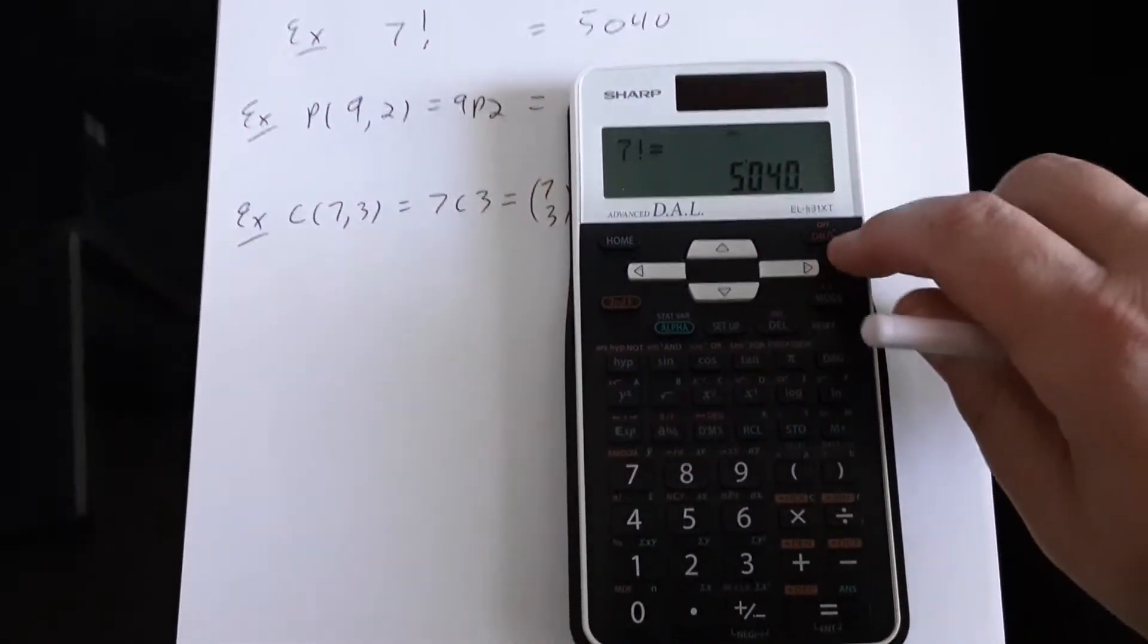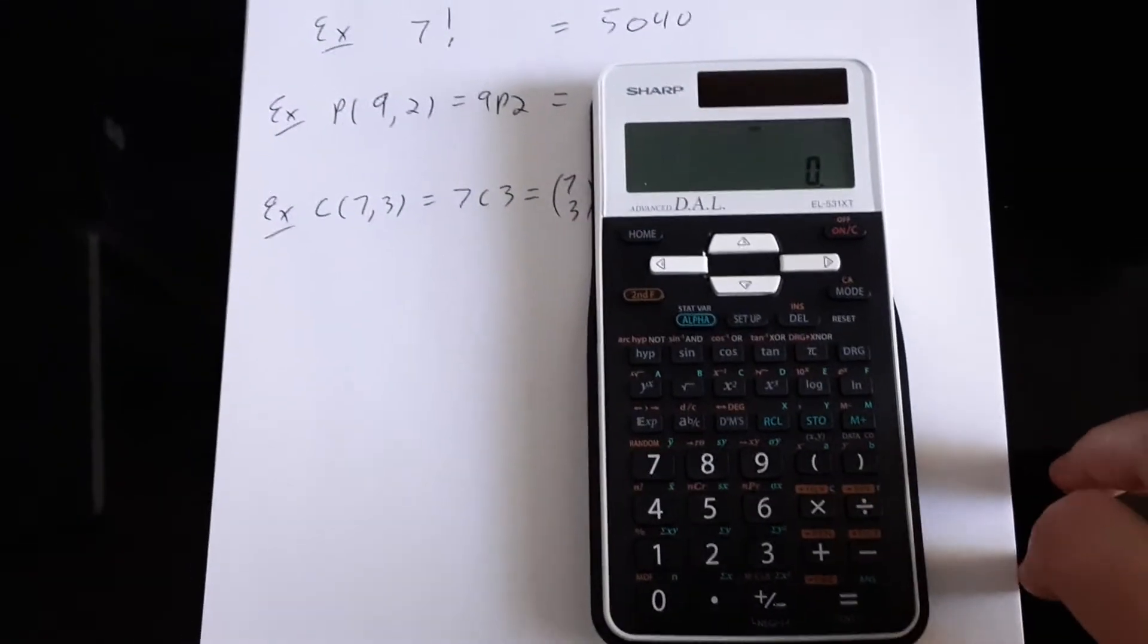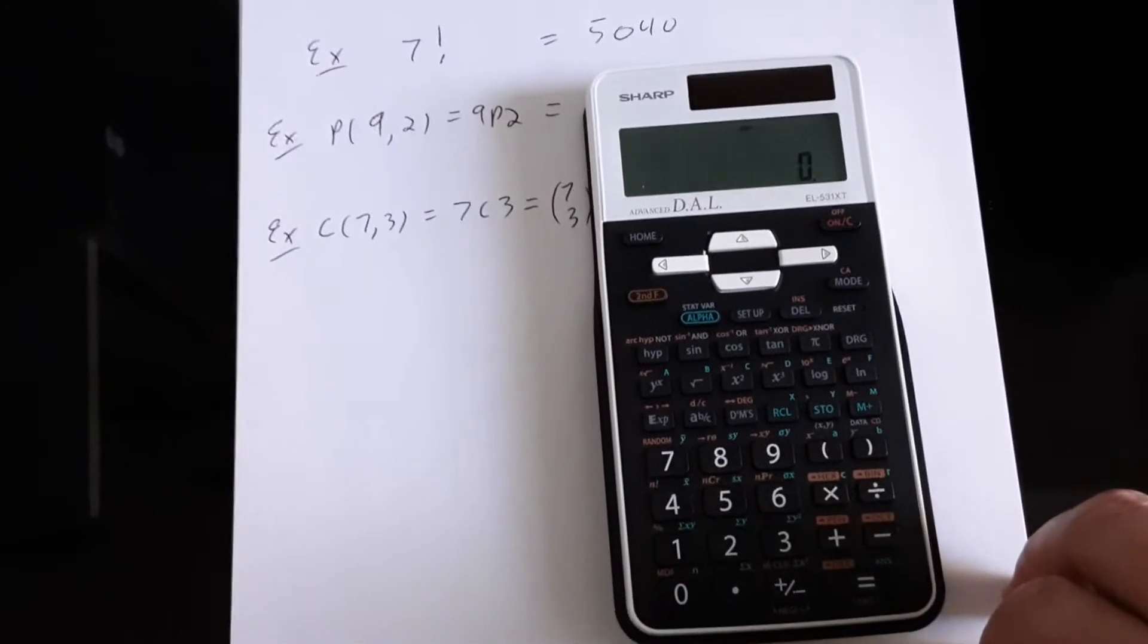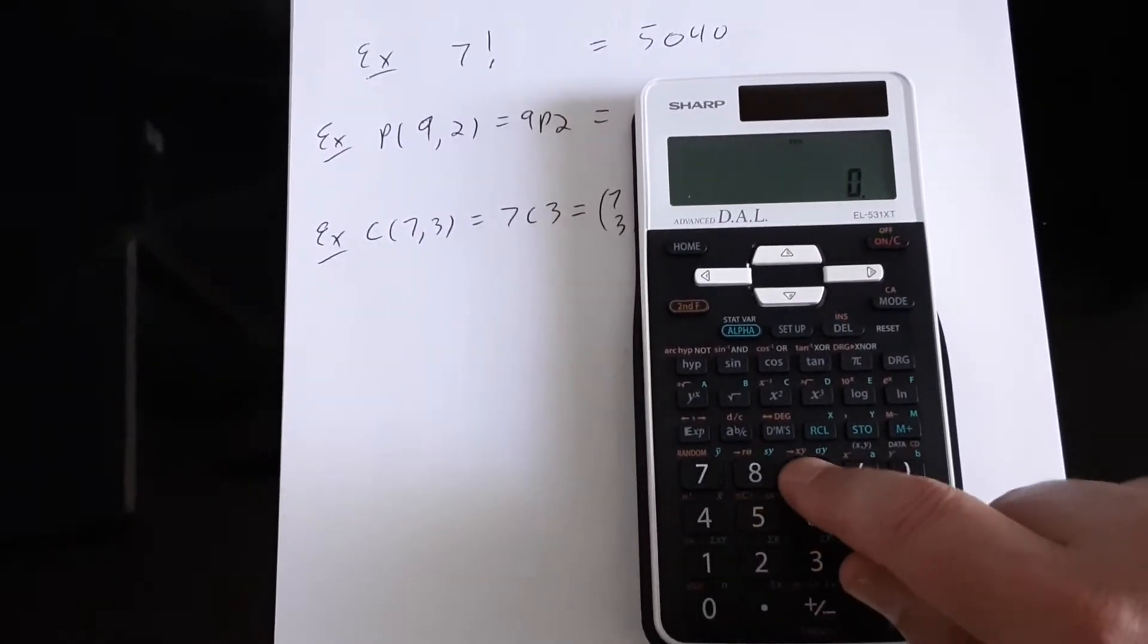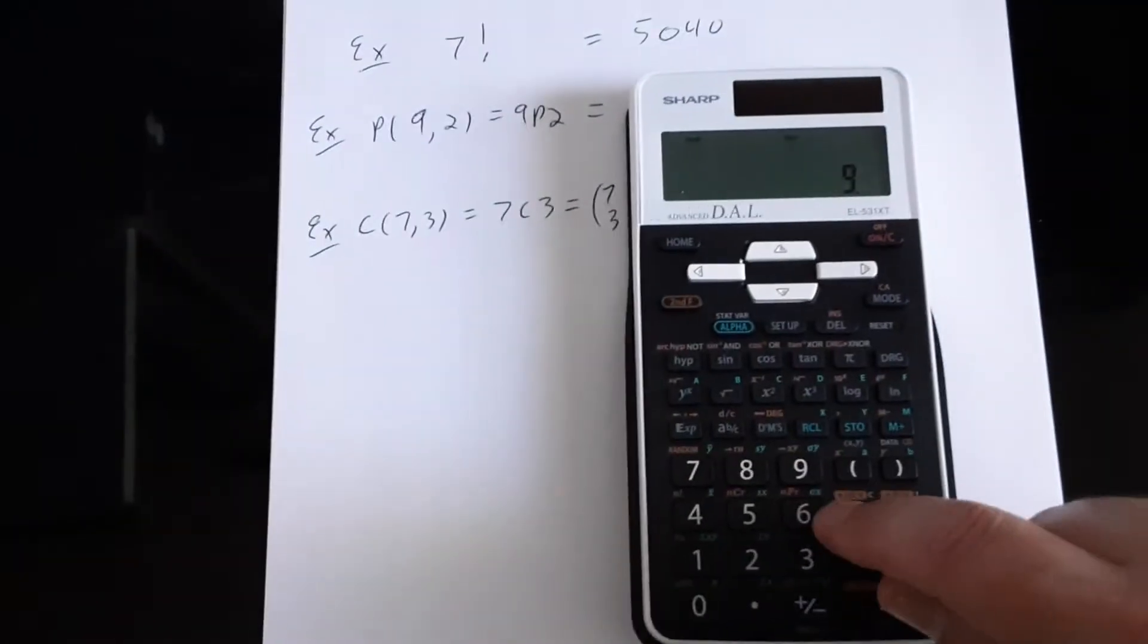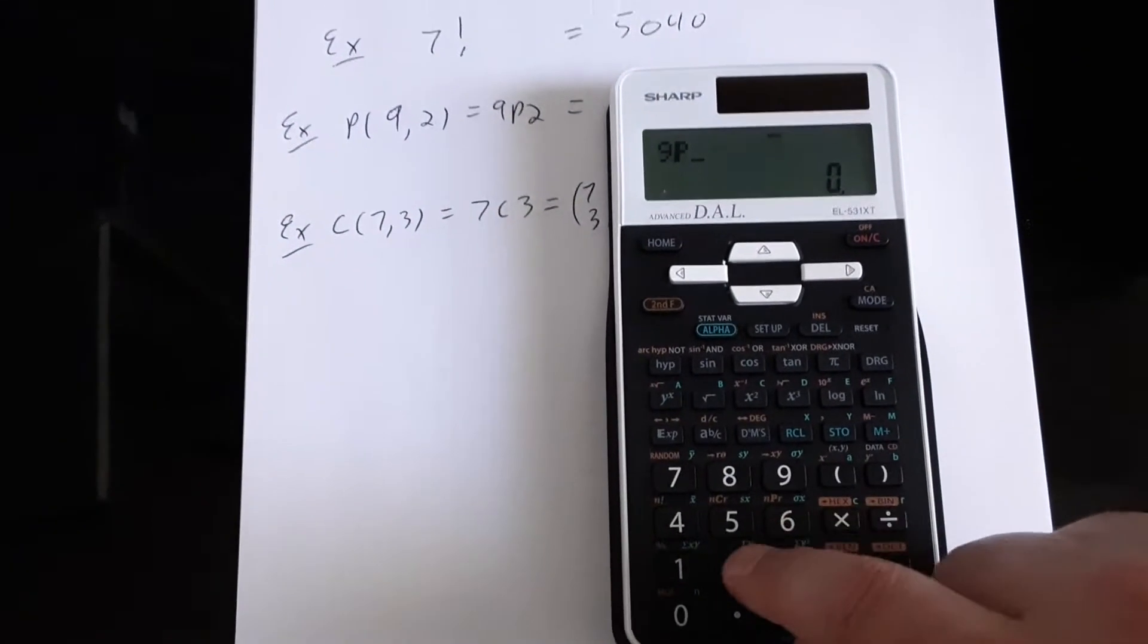So if we'd like to know how many ways there are to do that, if we had nine friends we want to pick two of them and then line them up for a photograph, the number of ways we could do that would be 9, second function 6, and then 2.